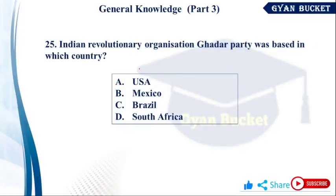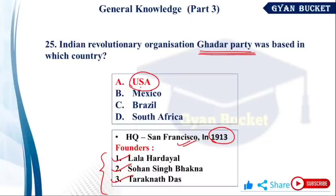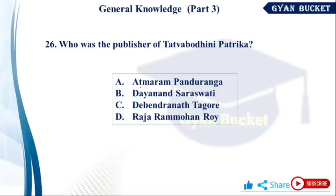The Indian revolutionary organization Ghadar Party was based in which country? The Ghadar Party was based in San Francisco, headquartered there in 1913. The founders are Lala Hardayal, Sohan Singh Bhakna, and Taraknath Das. Who was the publisher of Tattvabodhini Patrika? Debendranath Tagore — option number C.